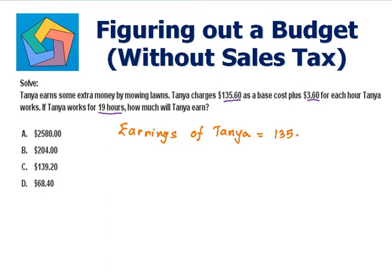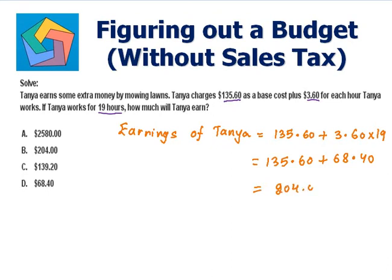Earnings of Tania equal $135.60 plus $3.60 times 19, for the 19 hours she is working. Now, $3.60 times 19 is $68.40. So this is $135.60 plus $68.40, which equals $204 dollars. That is the answer in part B. We can highlight it.